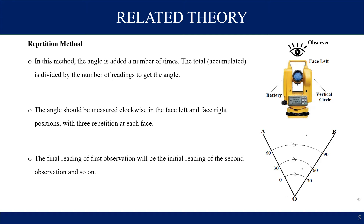In this method you have to measure the angle many times and the total accumulated value is divided by the number of repeated readings. You have to measure the angle clockwise in the face left and clockwise in the face right, and you have to give three repetitions in each phase.